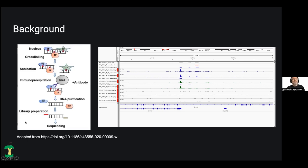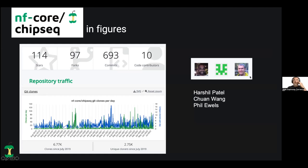I'm not a wet lab guy, so probably many of you can explain this better than myself. And this is the kind of output that we obtain after we have run our NF-Core ChIP-seq pipeline or other similar pipelines. So some figures from the NF-Core ChIP-seq pipeline — it's currently the third most popular pipeline, although it has not been updated for a long time, as we will discuss today.